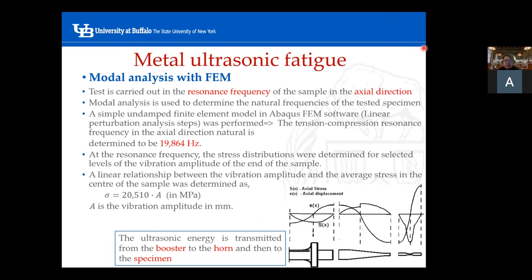The test setup consists of three parts. First, we have a component called the booster, which is used to generate the vibration displacement amplitude. The ultrasonic energy is transmitted from the booster through the horn all the way to the final sample. The larger stress amplitude is at the gauge section, which is where we are interested. This shows the distribution of stress and the distribution of displacement.